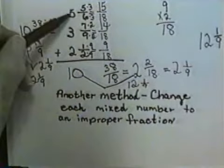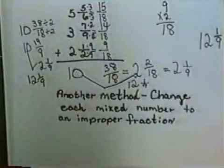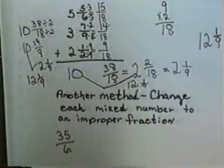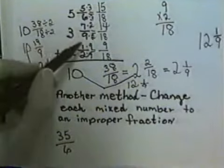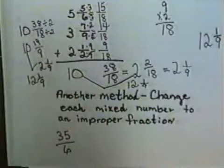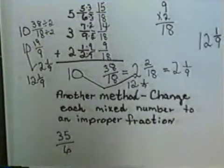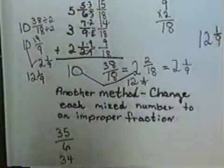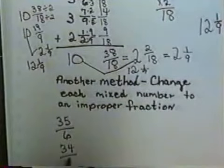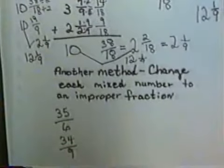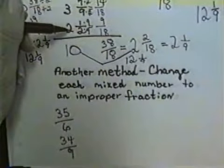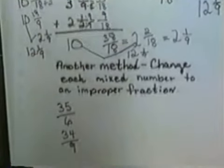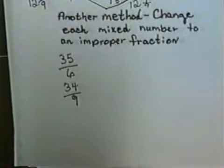So I'd write down 35 sixths. Then my 3 and 7 ninths, I'd say 9 times 3 is 27 plus 7 would give me 34 ninths. Then my last one I need to make improper is the 2 and 1 half. I'd say 2 times 2 is 4 and 1 would give me 5 halves.